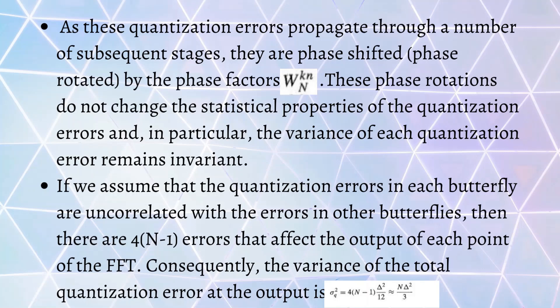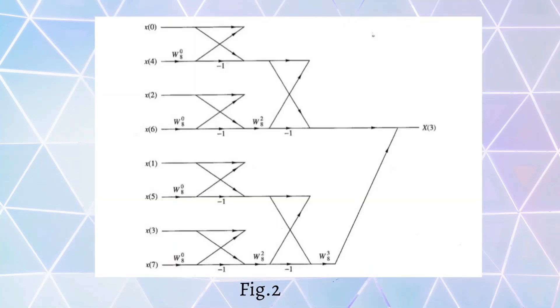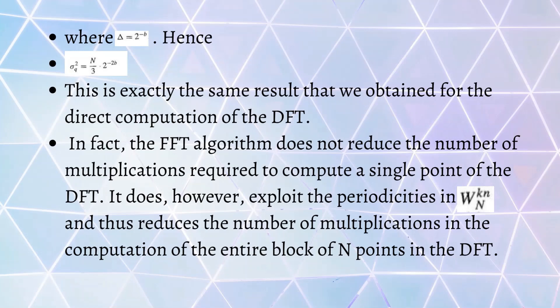Consequently, the variance of the total quantization error will be N·Δ²/3, where Δ is 2^(-b). The quantization error variance will be N/3 · 2^(-2b), and this is exactly the same as we obtained for the direct computation of DFT. In fact, FFT algorithm does not reduce the number of multiplications required to compute a single point of DFT; however, it reduces the multiplications in the computation of the entire block of N points.